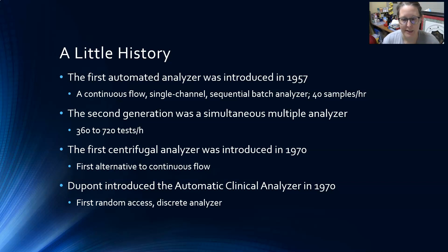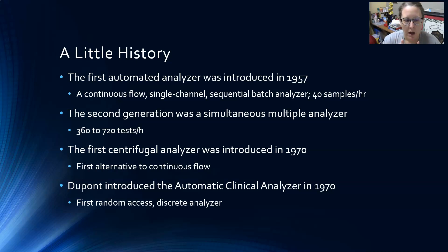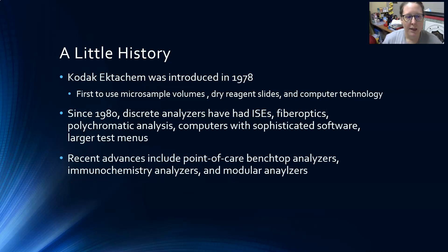The first centrifugal analyzer was introduced in 1970 — it was the first alternative to continuous flow, and I will explain the difference between continuous flow and centrifugal analysis in just a minute. DuPont then introduced the Automatic Clinical Analyzer in 1970 as well, and it was the first random access discrete analyzer. I will also define these terms in just a minute.